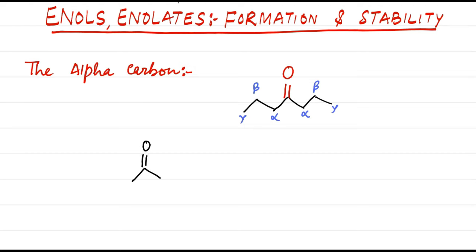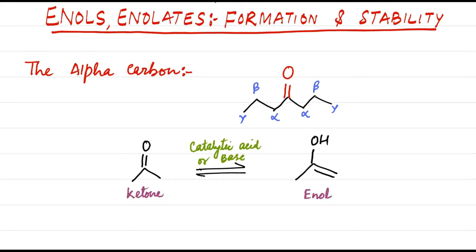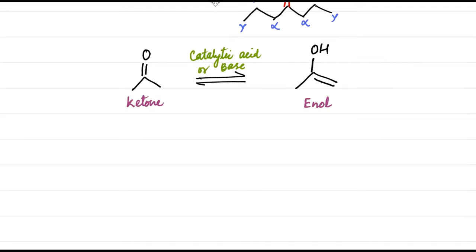In the presence of catalytic acid or base, a ketone or an aldehyde will exist in equilibrium with an enol. The vast majority of reactions depicted by carbonyl compounds, especially aldehydes and ketones, proceed via either an enol or an enolate intermediate. The ketone and enol shown here are tautomers — that is, rapidly interconverting constitutional isomers that differ from each other in the placement of a proton and the position of a double bond. Do not confuse tautomers with resonance structures; the two structures differ in the arrangement of their atoms and represent two different compounds, both present at equilibrium.